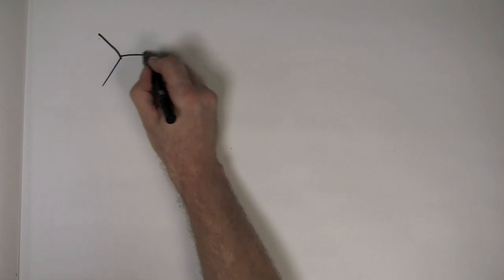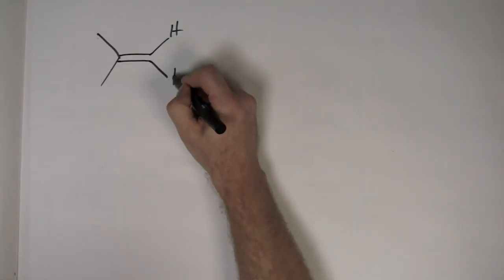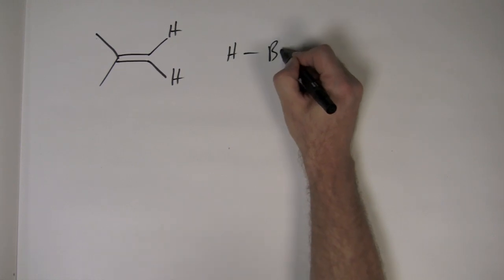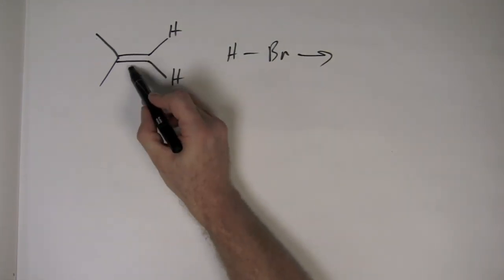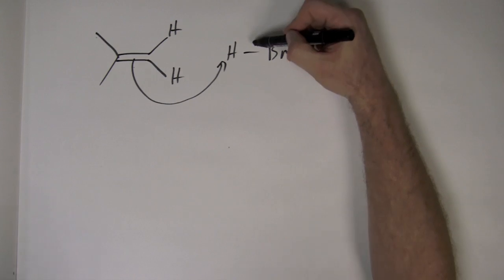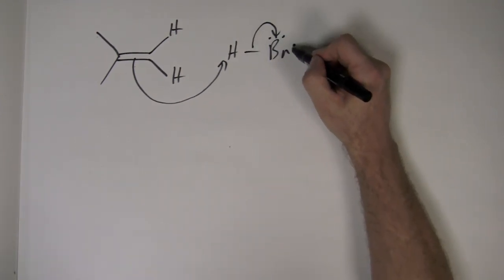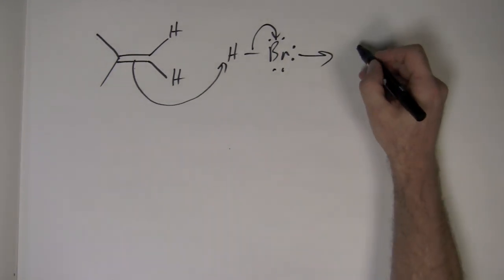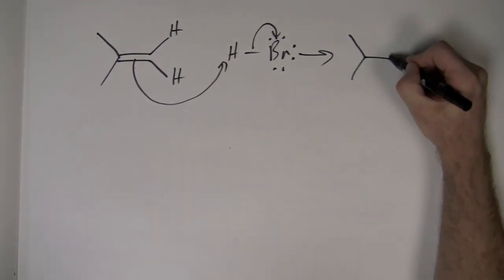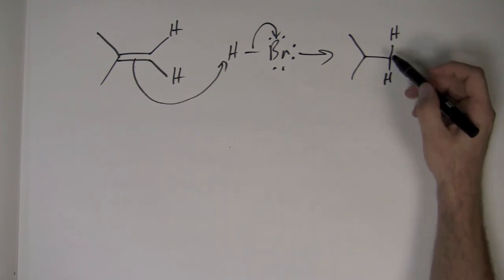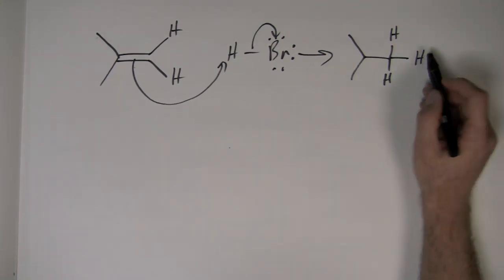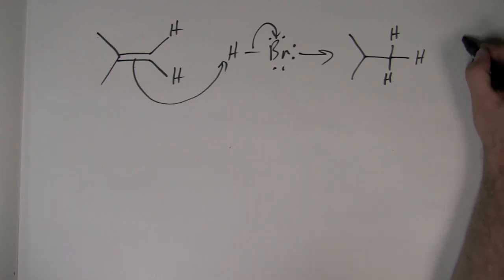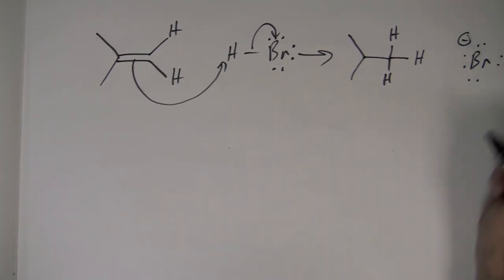When an alkene reacts with HBr, electrons from the pi bond or double bond pick up a proton. Electrons move out, electrons move over to bromine. Always show all electrons. When we write the product, we need to show the bond between the two hydrogens and the bond between the new hydrogen atom. And we show bromine with the electrons that it left with.